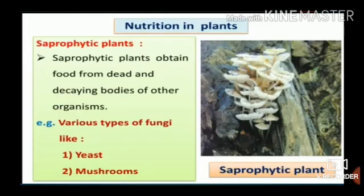Saprophytic Plants: Living organisms that depend upon dead and decaying substances for food are called saprotrophs. This mode of obtaining nutrition is called saprophytic nutrition. Plants which obtain food from dead and decaying bodies of other organisms are called saprophytic plants. Various types of fungi like mushrooms and yeast are saprophytes. Fungi secrete digestive enzymes on dead remains to digest or break down carbon compounds, and the resulting solution is absorbed to obtain nutrients.